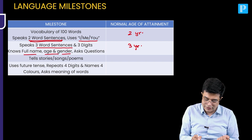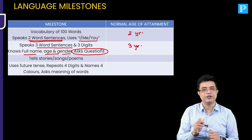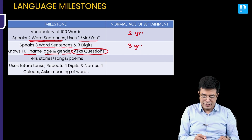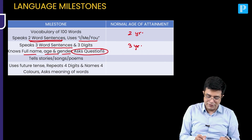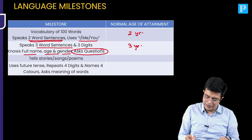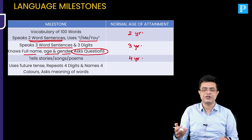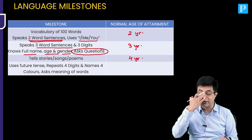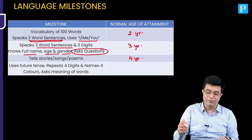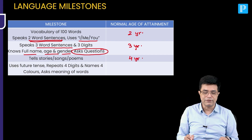He is able to ask questions starting from 3 years of age. Then the child is able to tell a story, song, or poem starting from 4 years of age — so nursery rhymes like 'Baa Baa Black Sheep' or 'Twinkle Twinkle Little Star,' the child is able to say starting from 4 years of age.